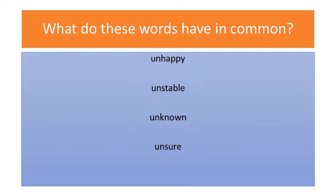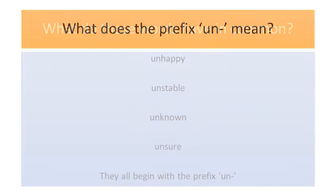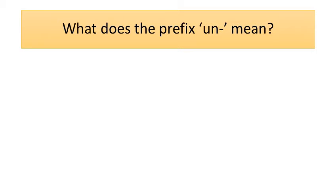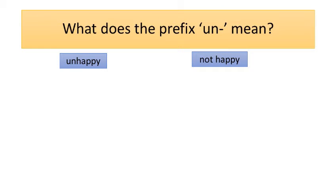Have a little think. That's right — they all begin with the prefix un. What does the prefix un mean? Unhappy — what does that mean? Have a little think. That's right, it means not happy. The word unstable — what does that mean? It means not stable.